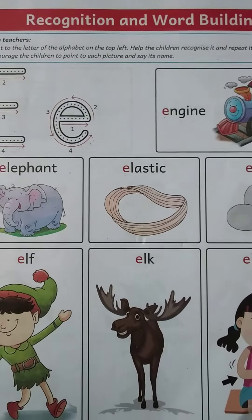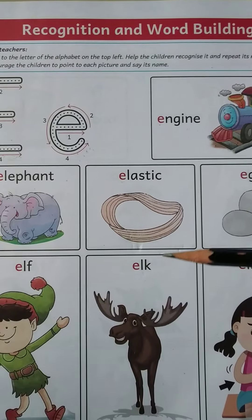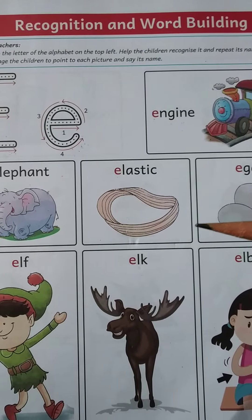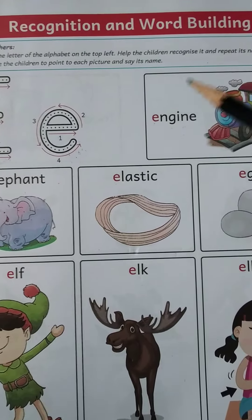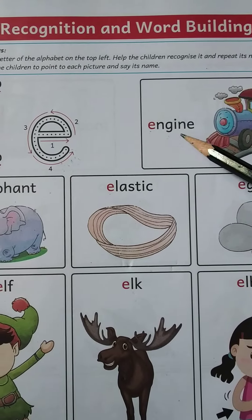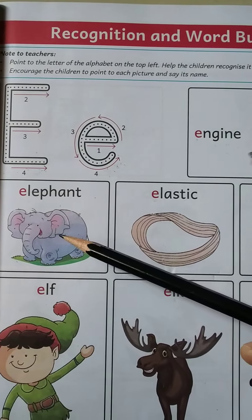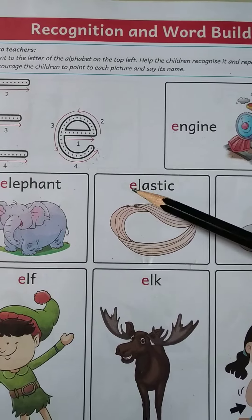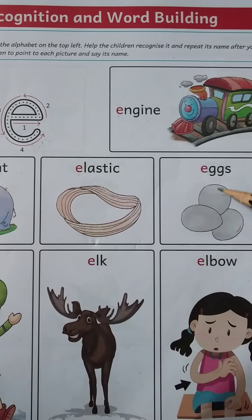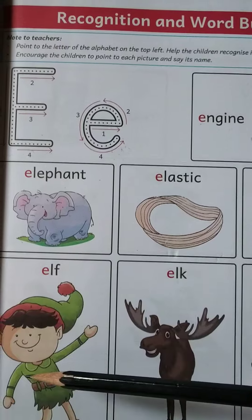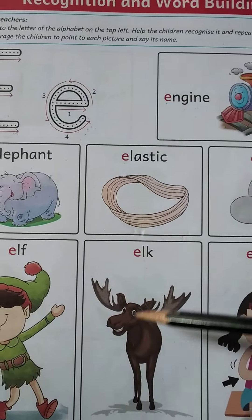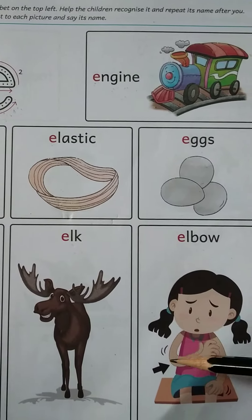Now I am showing you some words and pictures those are starting with E. E like E engine, E elephant, E elastic, E eggs, E elf, E elk, E elbow.